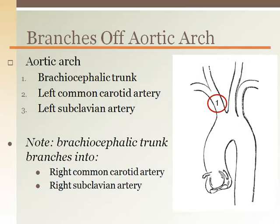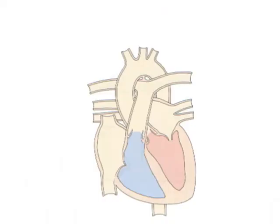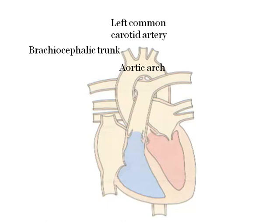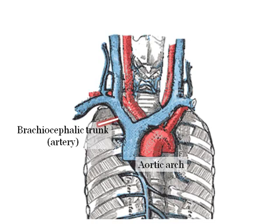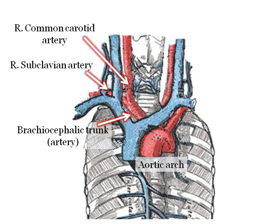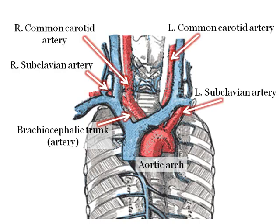The second branch is the left common carotid artery going straight up the neck, while the third branch is the left subclavian artery going under the clavicle and out to the arm. In summary, the branches off the aortic arch are the brachiocephalic trunk — which splits into the right subclavian and right common carotid artery — then the left common carotid artery, and finally the left subclavian artery.